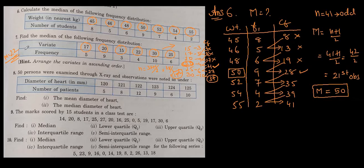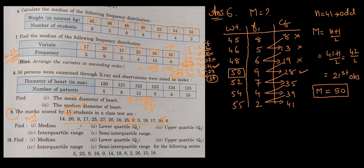Question number 8 is also in the same manner, but here you have to find out mean as well as median. For mean, x̄ = Σ(fᵢxᵢ) / Σfᵢ. Find median as we have done in questions 6 and 7. For question number 9, 15 numbers of students are given, so n=15. Arrange in ascending order starting from 0; the highest observation is 30 and the lowest is 0. Try to solve that one yourself.